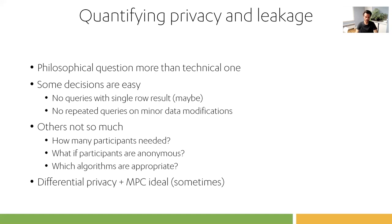Differential privacy could be a solution here, and it's something we're definitely looking into — to see if we can support the combination of differential privacy and MPC. Unfortunately, for this particular use case, it doesn't look like our data makes it very well-suited for differential privacy, because it would mostly ruin the accuracy of the data.